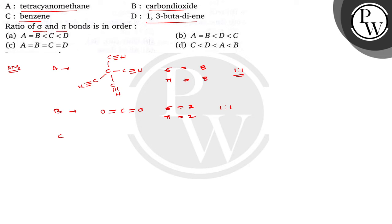In case of C, it is benzene. So this is the structure of benzene and let's calculate the number of sigma bond and pi bond. Bachyo, here sigma bonds are 12 and pi bonds are 3. So the ratio is 4 is to 1.